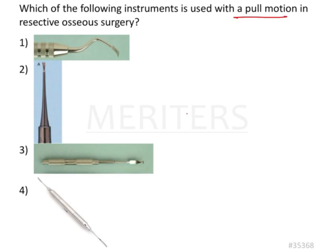There are four options given over here. Let's look into which of the following can be used in a pull motion. What we need to remember is chisels as such are instruments which are used with a push motion. The main reason why you use chisels with push motion is because they are used with a force. The bevel of the instrument is also such that if you see this is how the instrument is beveled. So you push the instrument so that it can cut through the bone.